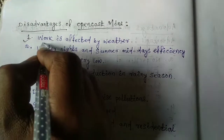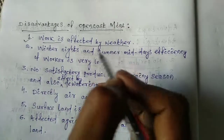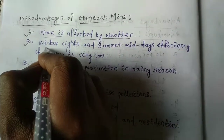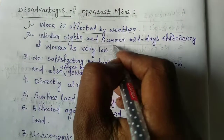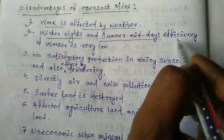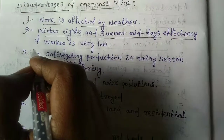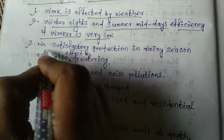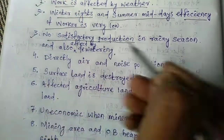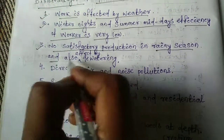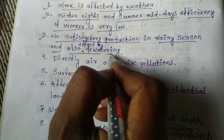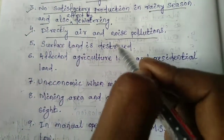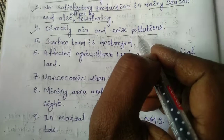First, work is affected by weather. Second, in winter nights and in summer middays, efficiency of workers is very low. Third, no satisfactory production in rainy season, and also affected by dewatering.